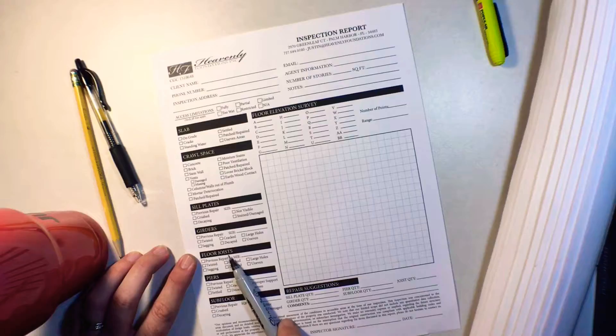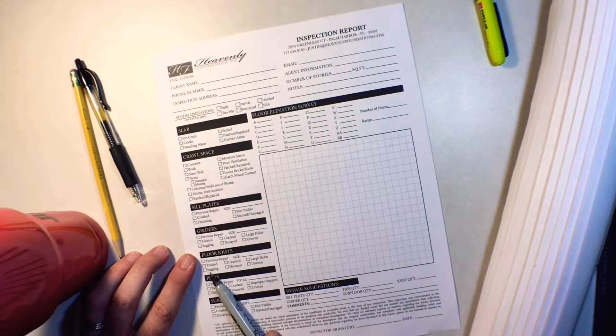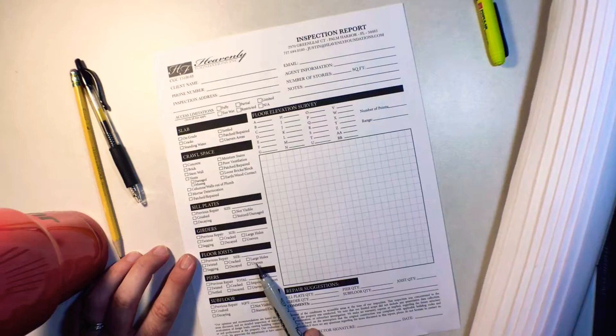On top of the girders is the floor joists. We're going to check again if there's any twisting, is there any sagging, crack, or decay that's going on in those.